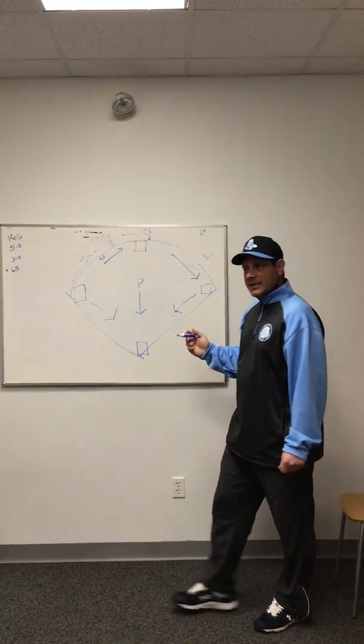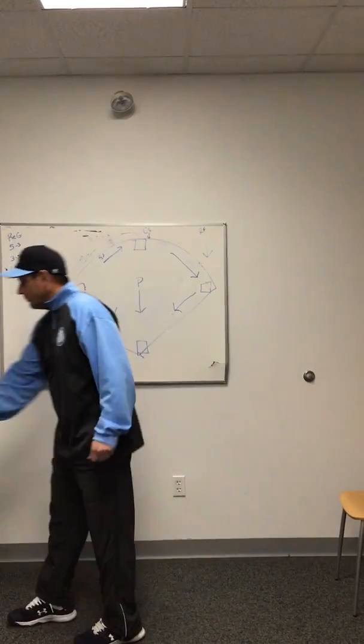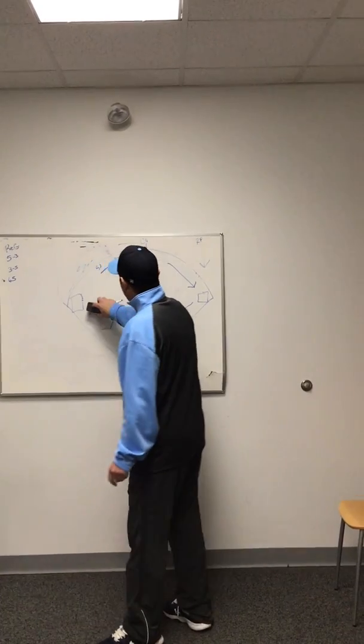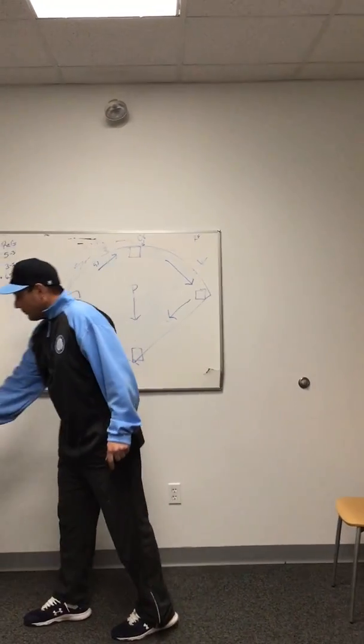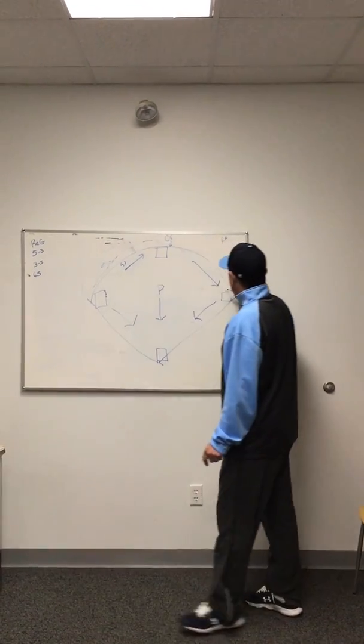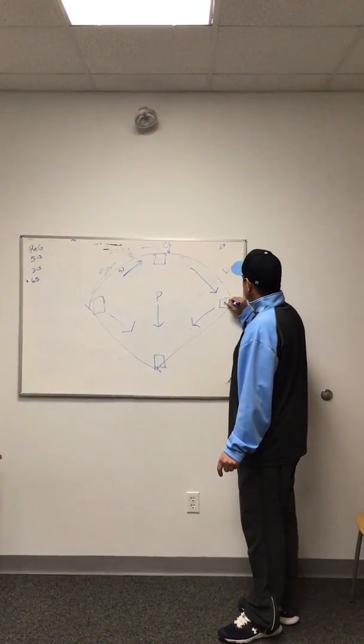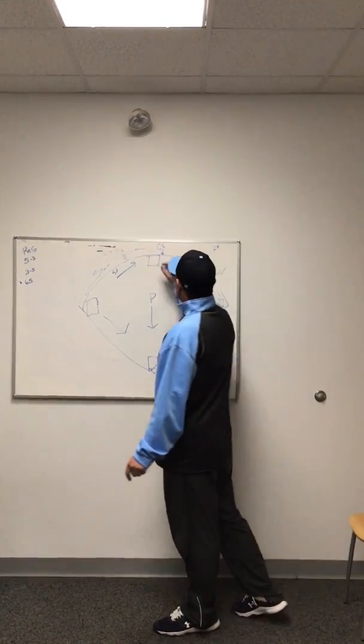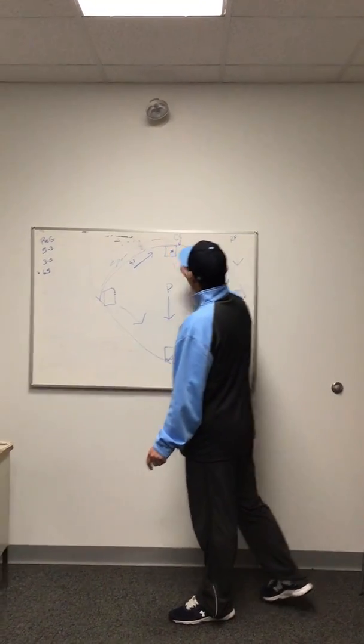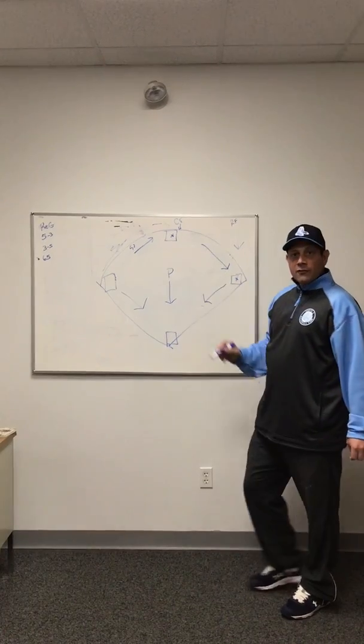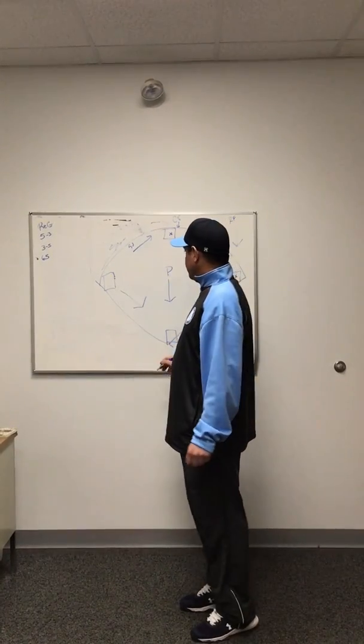With our regular bunt coverage, one variance that I want to talk about is that on our regular bunt coverage with the runner on first. Runner on first, or runner on first and second, is our third baseman. They're crashing here.